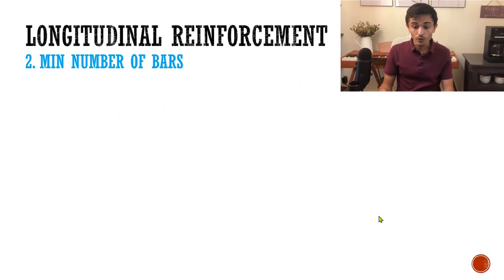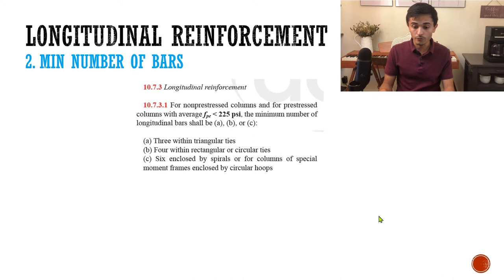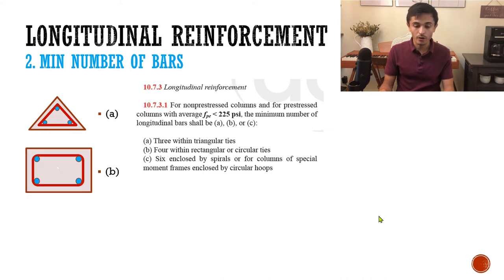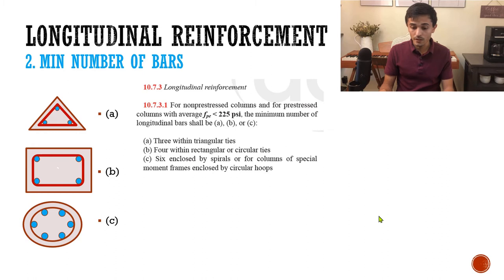Now we know more or less how much steel we need — between 1% and 8%. How about the minimum number of bars? The code pretty much tells you to put one at each corner at the very minimum. If you have a triangular column, which is rare, you need at least three rebars. If you have a rectangular or square column, you need four. And if you have a circular column, you need at least six longitudinal rebars.